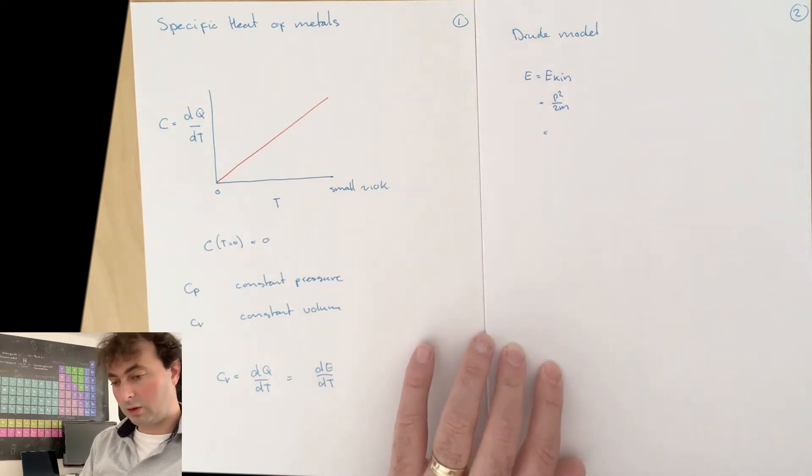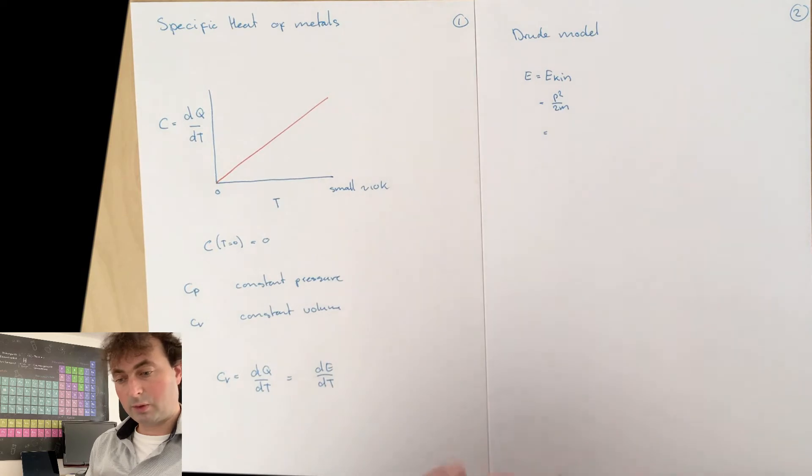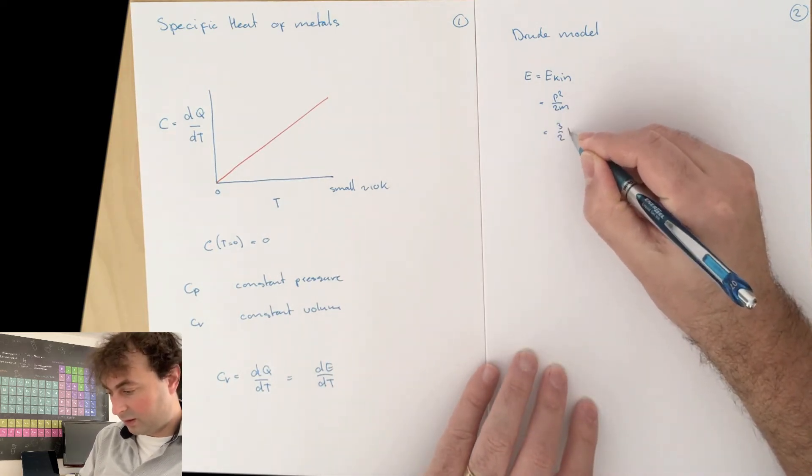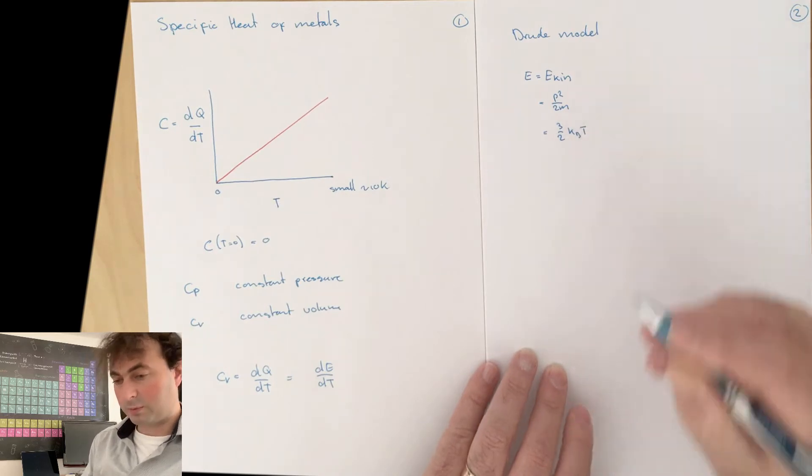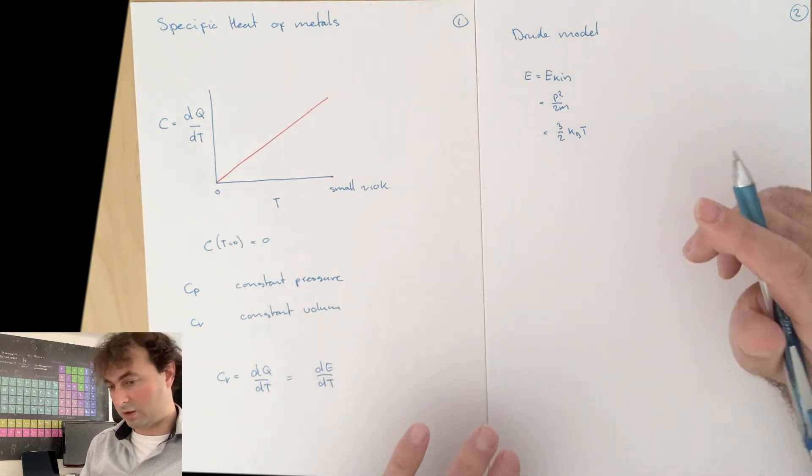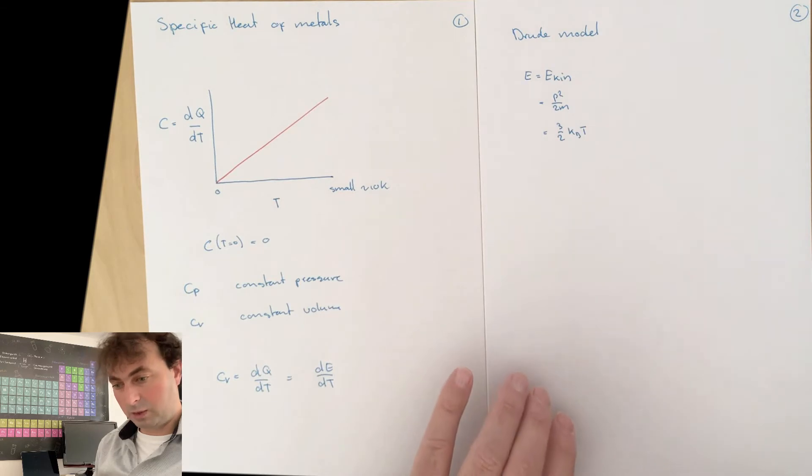In the Drude model, we said that the impulse or the momentum or the kinetic energy is given by 3/2 k Boltzmann T of the electrons at the point where they last scattered. We talk here about the sample at homogeneous temperature. So our internal energy is 3/2 k Boltzmann T per electron.